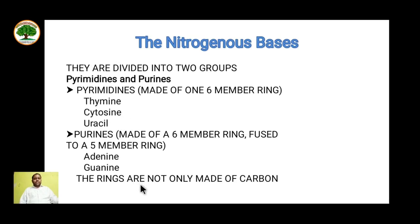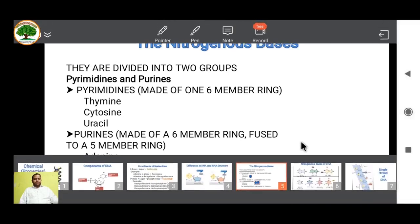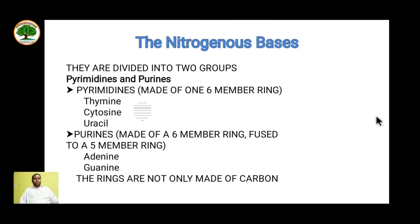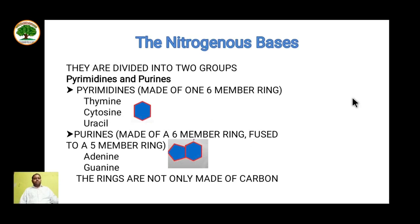These rings contain not only carbon but also nitrogen in their structure. You can see here it is a six-membered ring, and in case of purine, it is attached with a five-membered ring.